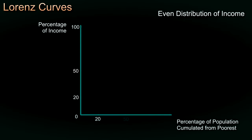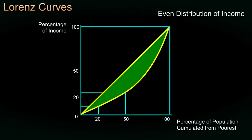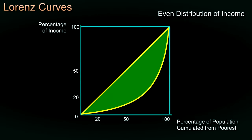Much more typically, we have an uneven distribution. So the poorest 20% might have only 5% of the income, and the poorest 50% might have only 25% of the income. You can see that the further from the line of equality the Lorenz curve is, the more uneven is the distribution of income.